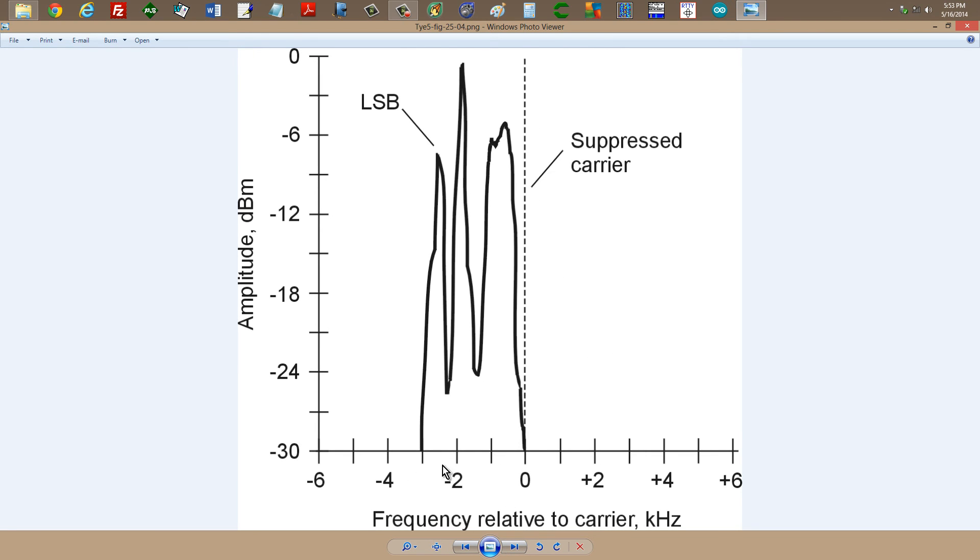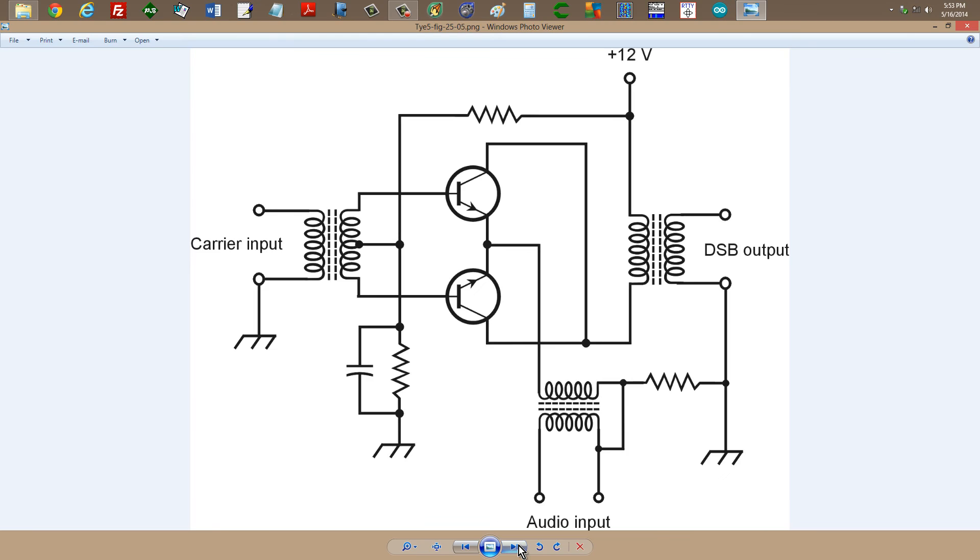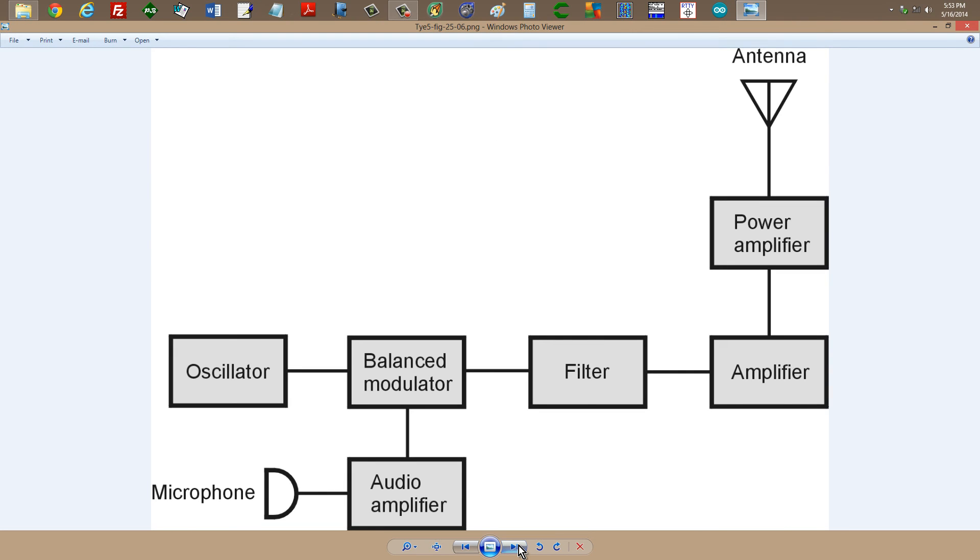And then you get this by applying usually a brute force three kilohertz wide intermediate frequency filter. And that is the final product, a single sideband transmitter. Your oscillator, your balanced modulator, your microphone audio amplifier producing a double sideband suppressed carrier signal right there. Then your three kilohertz wide IF filter here to filter out either the lower or upper sideband as you may desire. Your driver or radio frequency amplifier and your power amplifier.